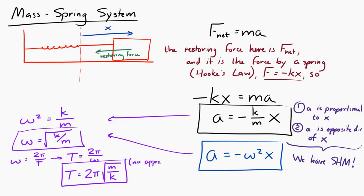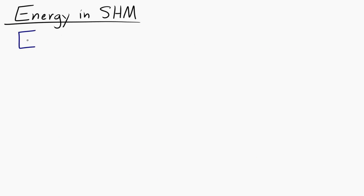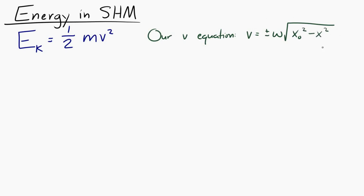Notice that for the mass on a spring we did not make any approximation, unlike the pendulum where we needed the small-angle approximation. Now let's look at energy in simple harmonic motion. Starting with the kinetic energy equation, one-half mv squared, and using the velocity equation derived earlier, we can get an expression for kinetic energy in simple harmonic motion.